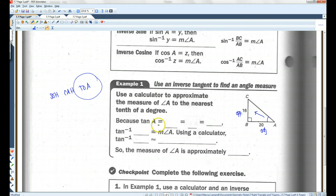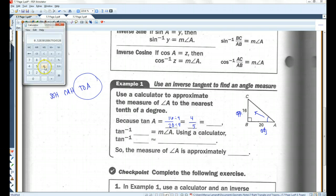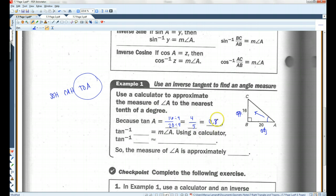Now, tangent of A equals 16 over 20. 16 over 20, if you divide top and bottom by 4, you get 4 over 5. 4 over 5, if you were to put it in a calculator, let's go ahead and do that. 0.8. I'm going to add a step in here.